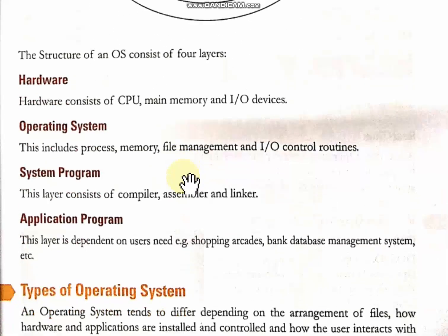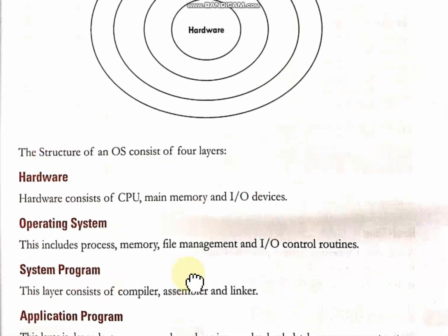Then we have the fourth layer: application programs. Application programs depend on what use you have for them. For example, if you want to shop online you use Amazon or Flipkart; if you are taking online classes you have Zoom; a person working in a bank uses banking software. So application programs depend on the user and what they need. These four are the layers of an operating system.